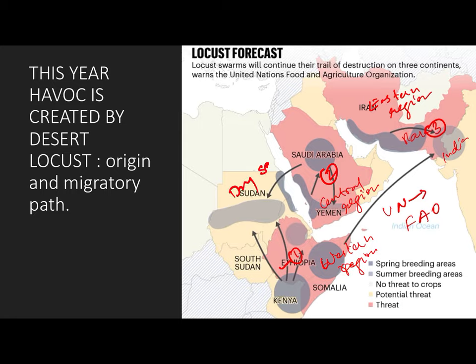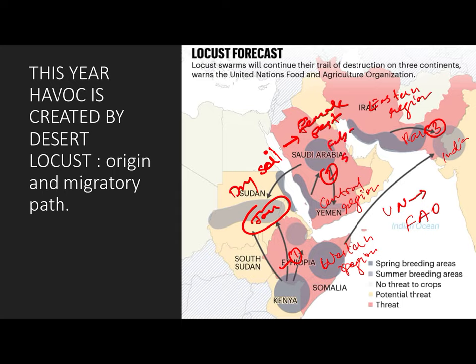Desert locusts breed in dry soils. Female locusts lay eggs in dry soils and breed under moist and temperate conditions. In December and January they generally breed, and when hot dry conditions return, breeding slows. In spring — February and March — there is a breeding ground in the central region, particularly the Arabian part and eastern region. Then they attempt to enter India in summer.